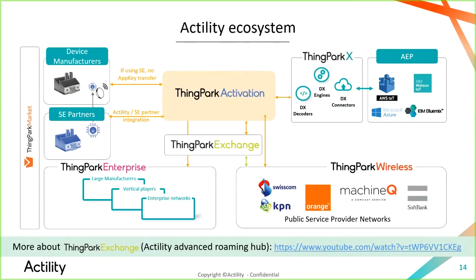Syncpark activation belongs to the Actility ecosystem. We are already powering many national rollouts with the Syncpark Wireless Suite, and also targeting large manufacturers and vertical players with the Syncpark Enterprise product. All of them will be interconnected through the Syncpark Exchange platform. Through Syncpark activation, we solve the AppEUI selection and AppKey sharing challenges. For more on Syncpark Exchange, there is another webinar available on YouTube — the Actility Advanced Roaming Hub enabling interconnectivity of all LoRaWAN systems. We also have a talk about Syncpark X Suite connecting all these systems with application development platforms for a complete data transformation and exposure product suite.